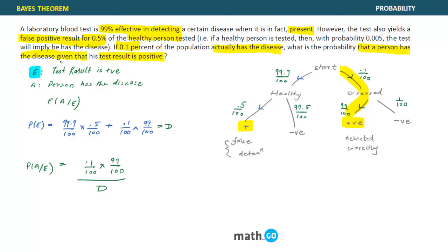According to Bayes, the answer is: (0.1/100 × 99/100) divided by the entire total probability value. I'm leaving the calculation for you. The main point was to explain how to plot the diagram and interpret Bayes - you'll always find a statement like 'given that' has already occurred.